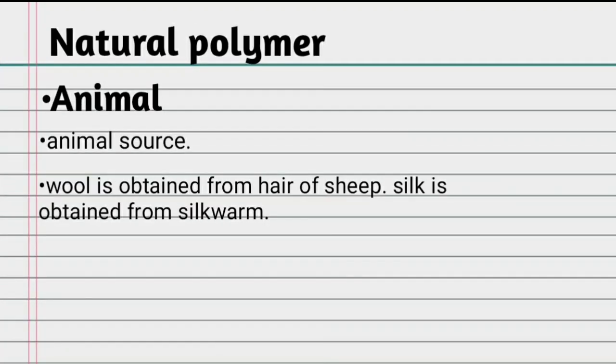The other example of natural polymer is animal-derived polymer. Animal polymers are derived from animal sources — wool is obtained from the hair of sheep, and silk is obtained from silkworms.